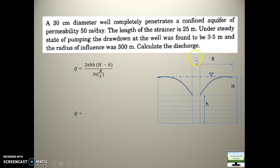So now in this problem, all other data are given. 2π, K value is given 50 meters per day. We change the units according to the calculation. And H minus h has been also given. H minus h, what you can write as drawdown. And the value of drawdown is 3.5. That's what I have put here. Okay, the radius of influence is 300.